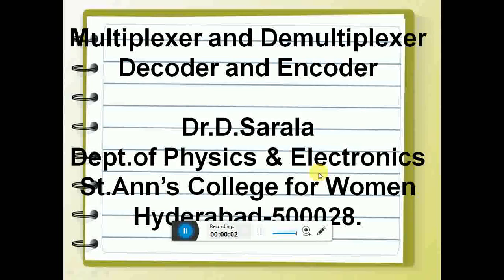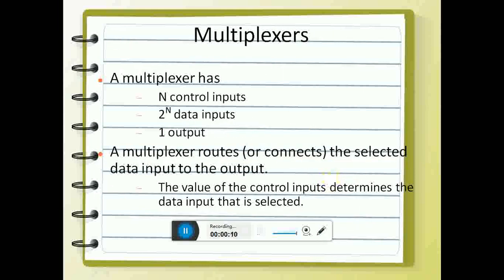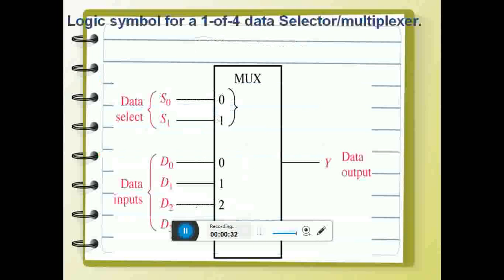Today we will cover multiplexers, decoders, and encoders. A multiplexer has n control inputs and one output — that is, it is many to one. The number of inputs is defined by 2 to the power m. It routes the selected data input to the output, and the value of the control inputs determines the data that has to be selected.